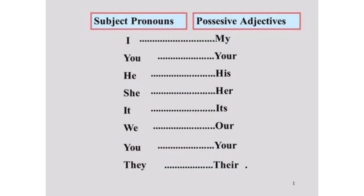Di lajur sebelah kiri ada subject pronouns, di sebelah kanan possessive adjectives. I – saya; You – kamu; He – dia laki-laki; She – dia perempuan; It – kata benda atau nama hewan; We – kami; You – kalian; They – mereka. Subject pronouns digunakan di awal kalimat dan harus ditulis dengan huruf besar. Possessive adjectives — my, your, his, her, its, our, your, their — biasanya ada di tengah kalimat untuk menunjukkan kepunyaan akan suatu benda.